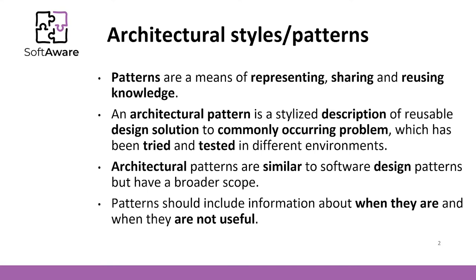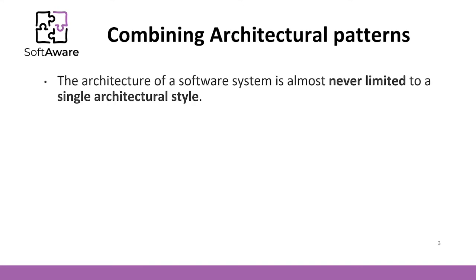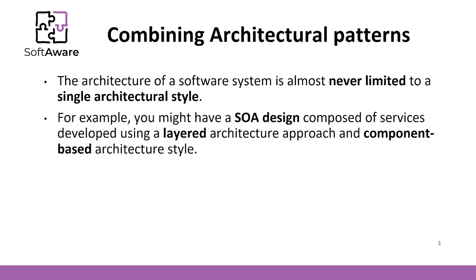Patterns may be represented using tabular and graphical descriptions. Although we will investigate architectural patterns one by one, I want to stress that the architecture of a software system is almost never limited to a single architectural style, but is often a combination of architectural styles that make up the complete system. For example, you might have a SOA design composed of services developed using a layered architecture approach and an object-oriented architecture style. We will see many examples in other videos.